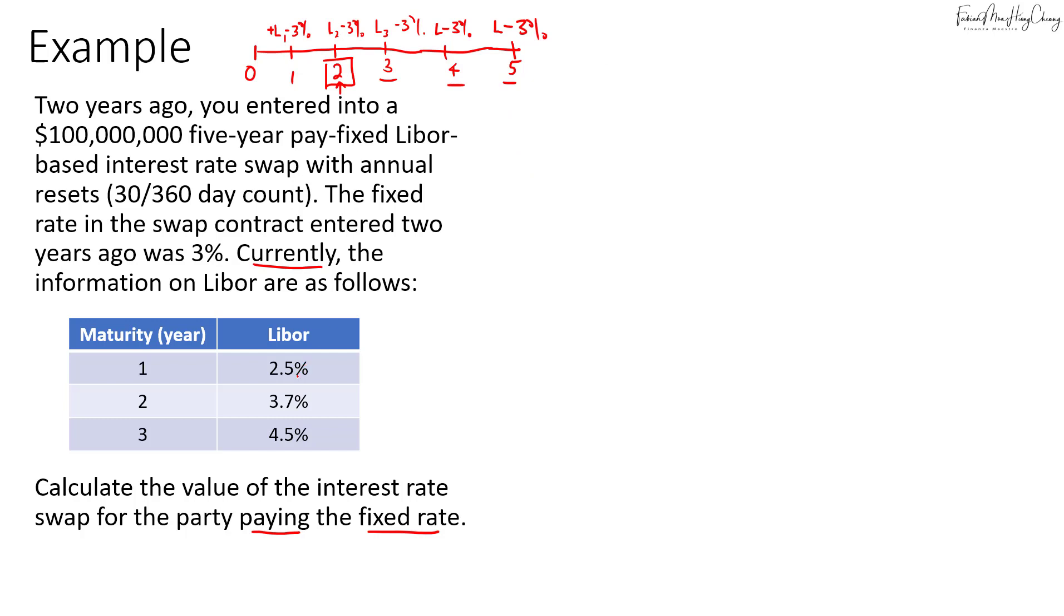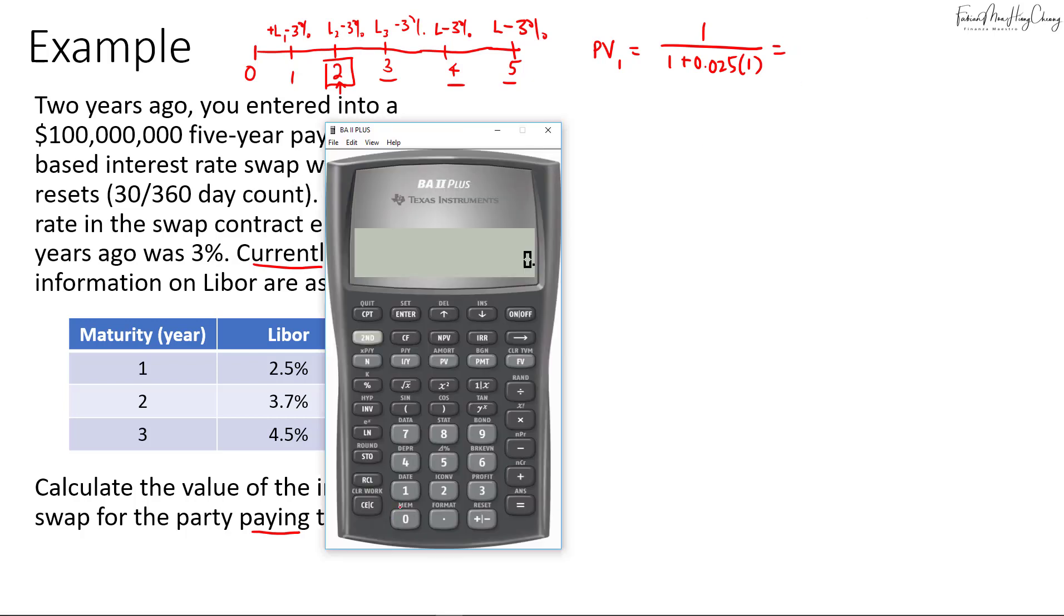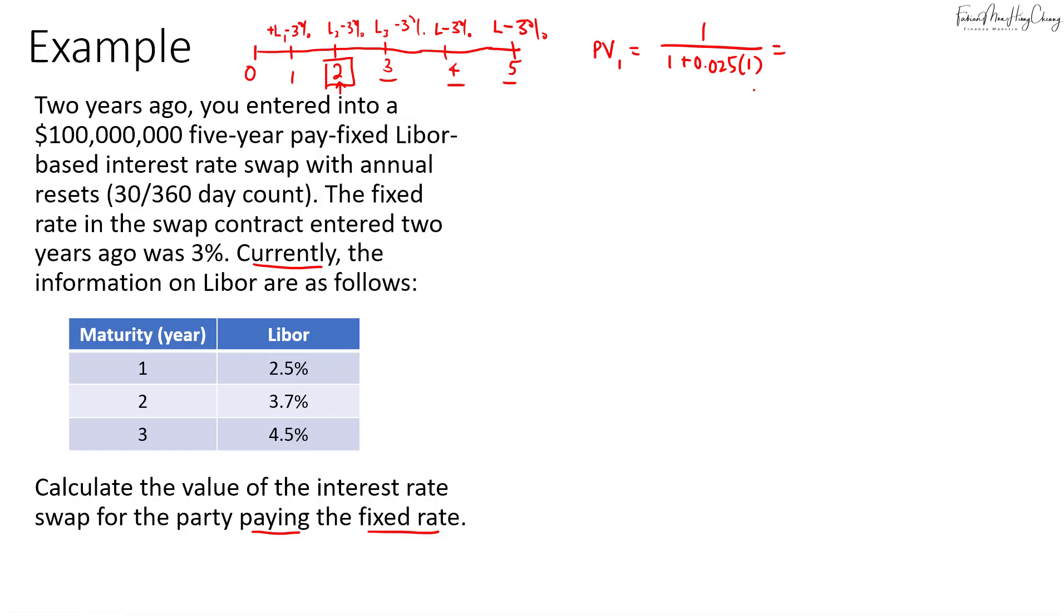Now based on what is covered in the last video that I did on pricing interest rate swaps, we're gonna calculate the present value of these three LIBOR rates. So for the PV of the one-year rate that will be 1 over 1 plus 2.5% multiplied by one year. So that will be equals to 1 plus 0.025 times 1 and then we invert it. So that's 0.9756. I'll store it into number 1.